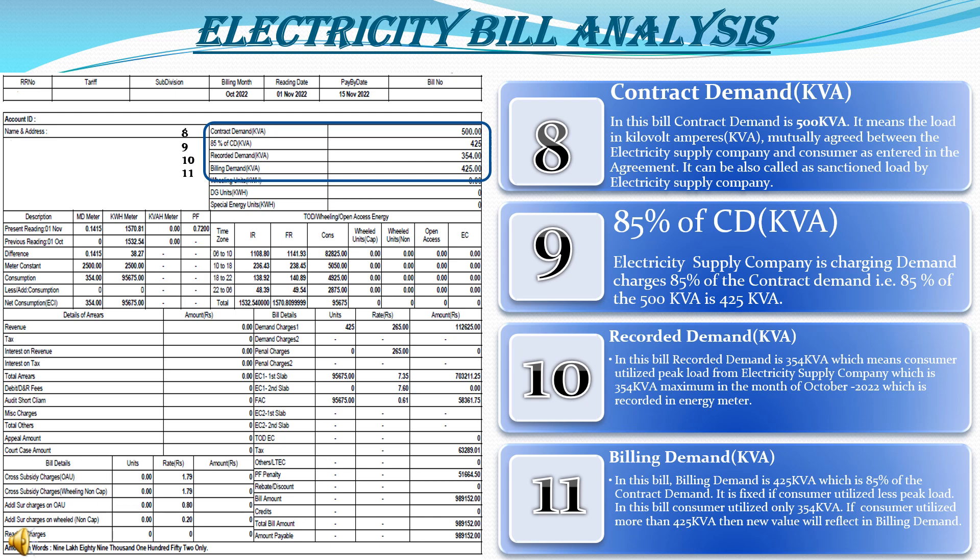The billing demand in this bill is 425 KVA, which is 85% of the contract demand — that is 500 KVA. If the consumer uses up to 425 KVA, it will reflect as 425 KVA only. If the consumer utilizes more than 425 KVA, the new value will reflect in the billing demand, and extra demand charges will be added on the billing side.